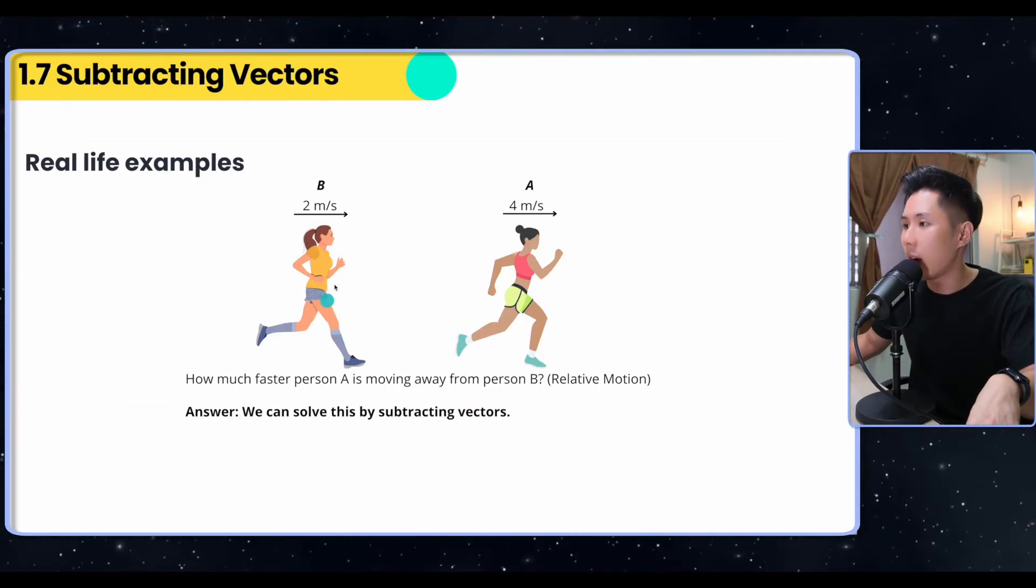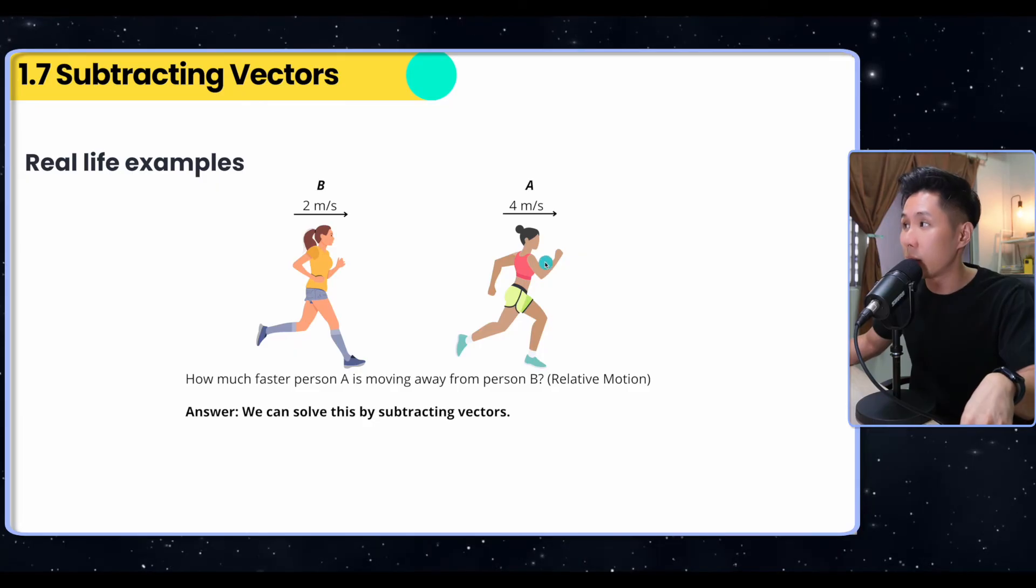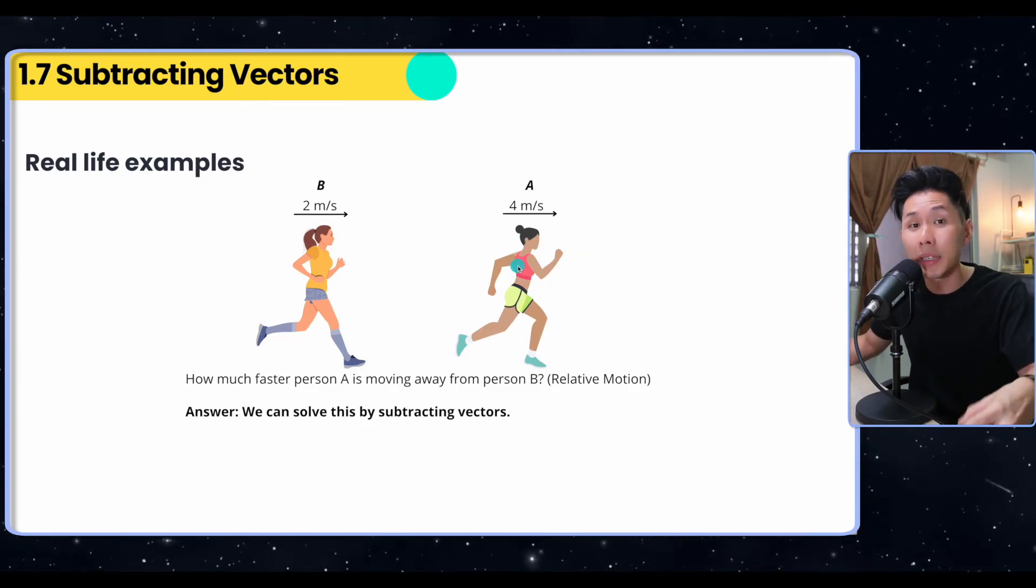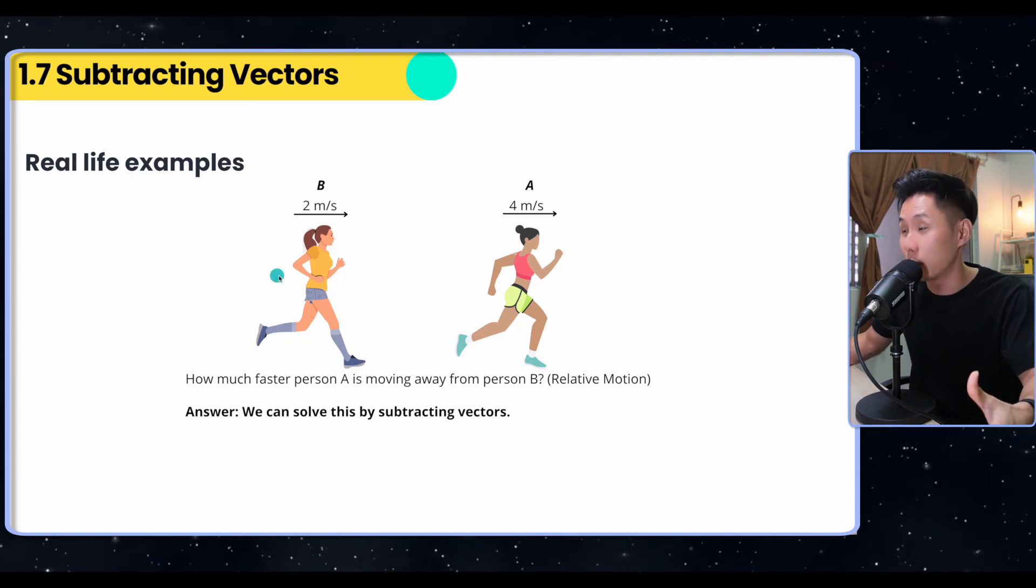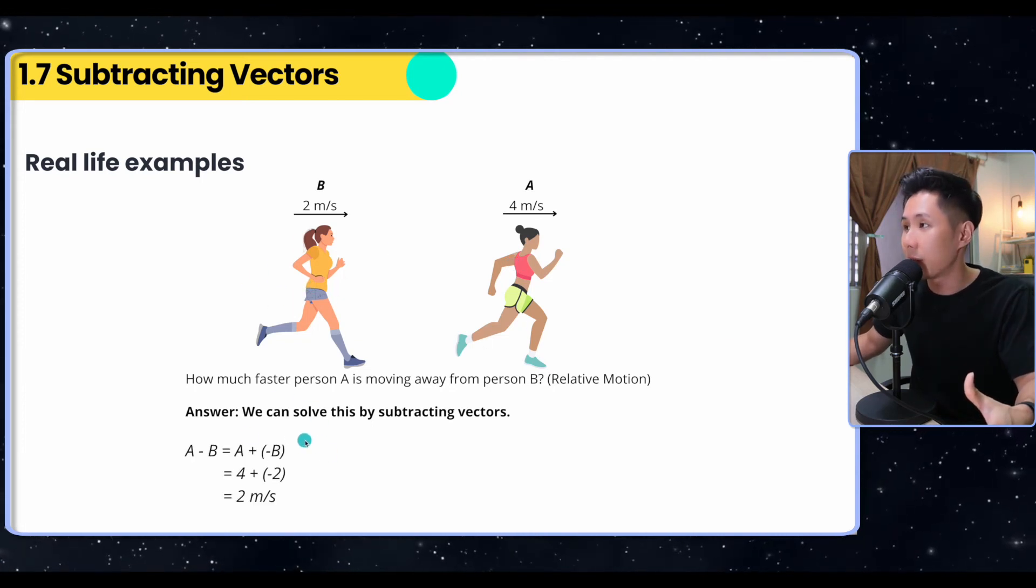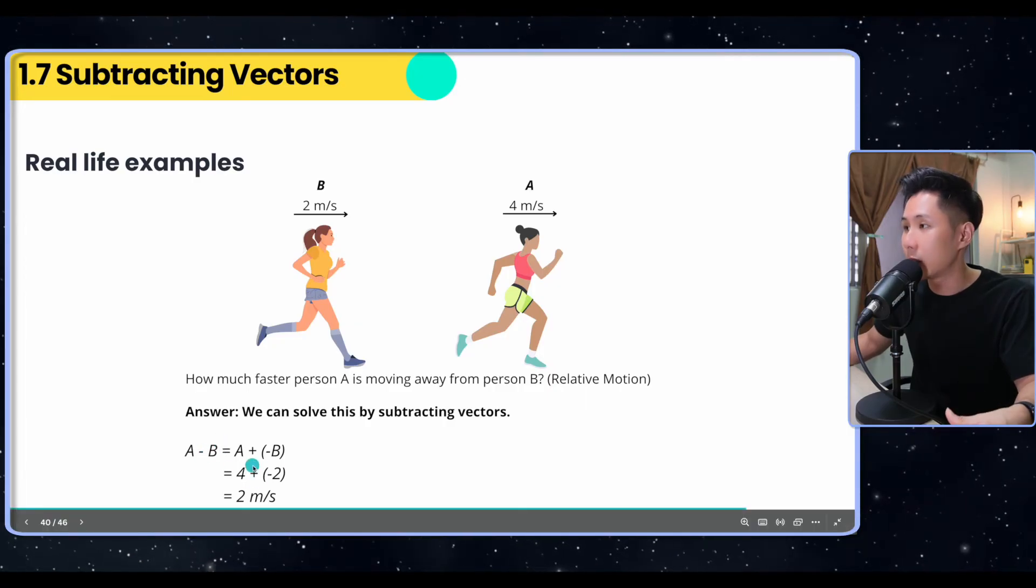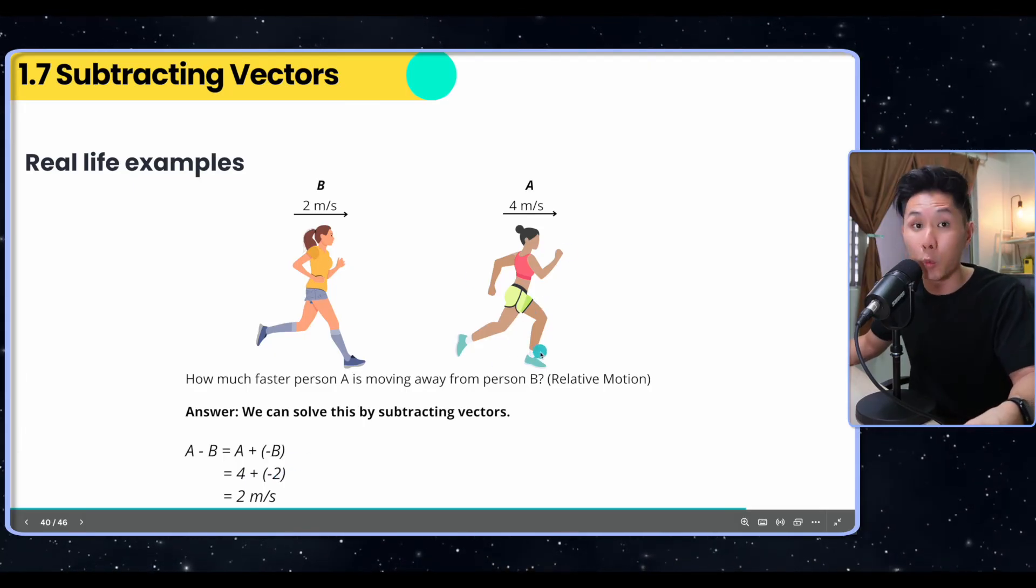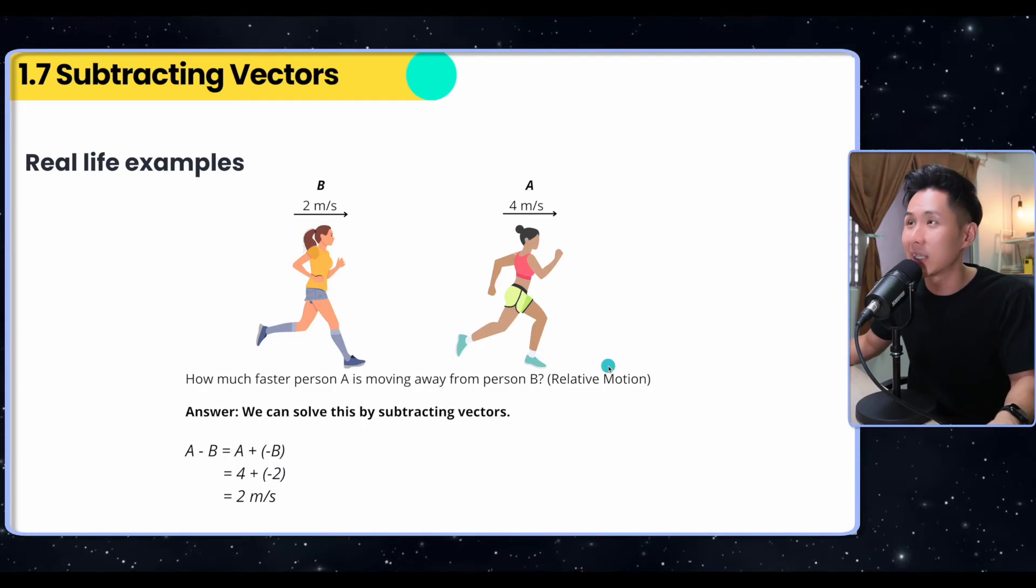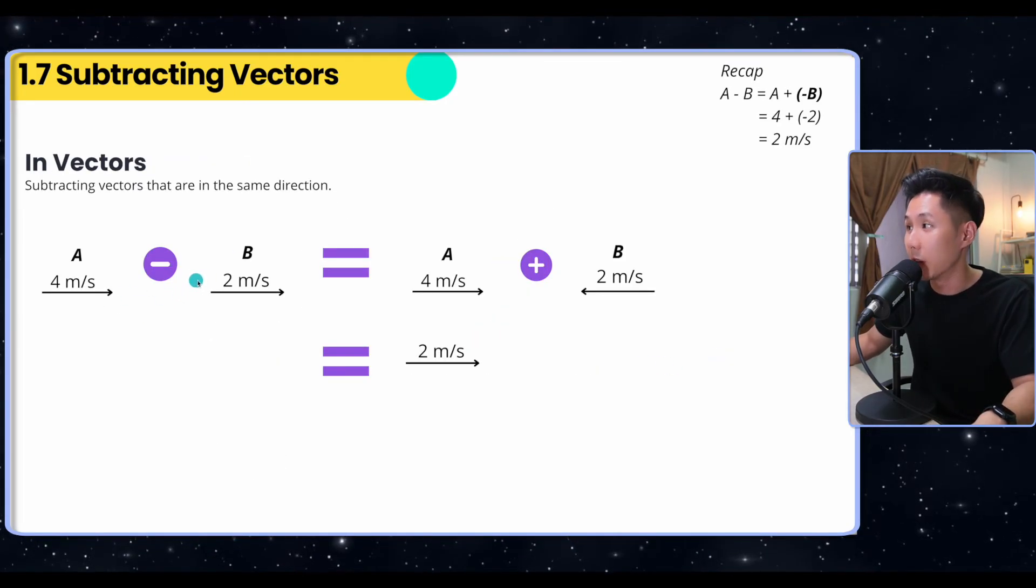Assuming that two persons are running, you want to find out how much faster person A is moving away from person B. You can do so by subtracting vectors. This person is moving at 4 meters per second, but it doesn't mean that they're moving 4 meters away from us per second because we are also moving, assuming that we are person B. That's when I can use vector A minus B. I will put the speed into the equation and I can find out that this person is moving 2 meters per second away from us.